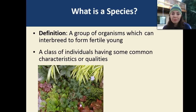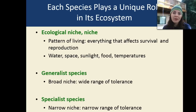Ecological niche, or a pattern of living — this means that everything affects the survival and reproduction of an organism's niche. Water, space, sunlight, food, as well as temperatures are very important to the ecological niche that an organism has.